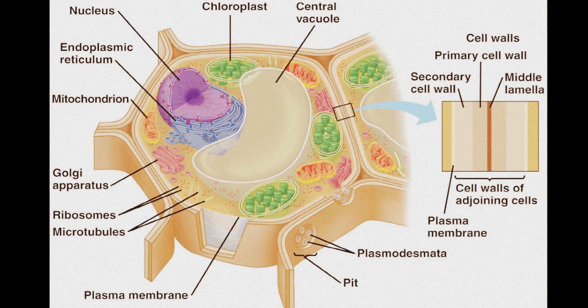Plant cells, that is. Moving on to the structure: plant cells have a rectangular shape that is always formed by the cell wall.